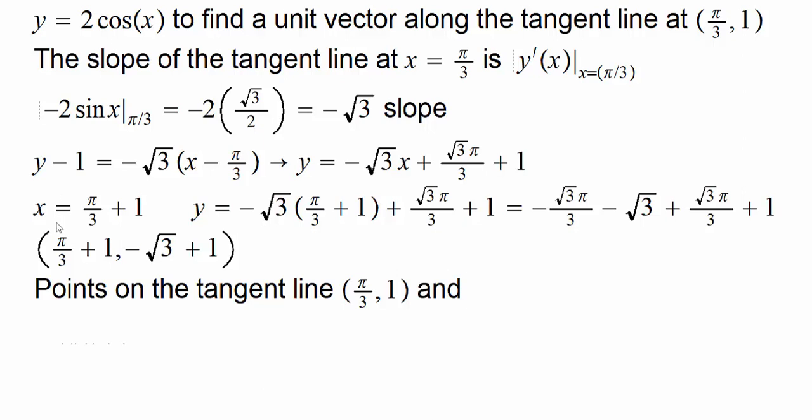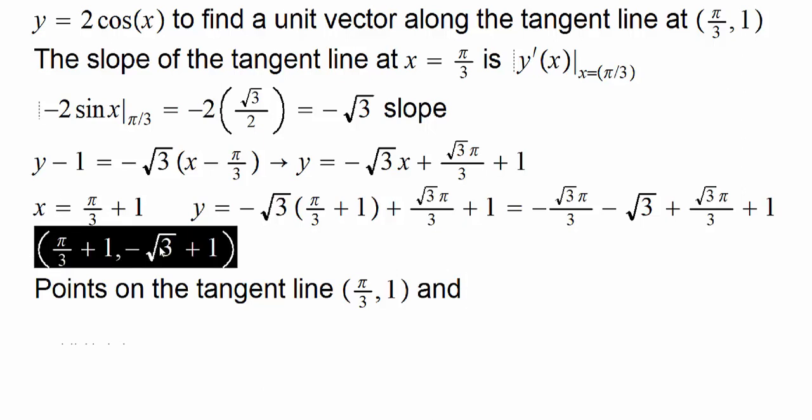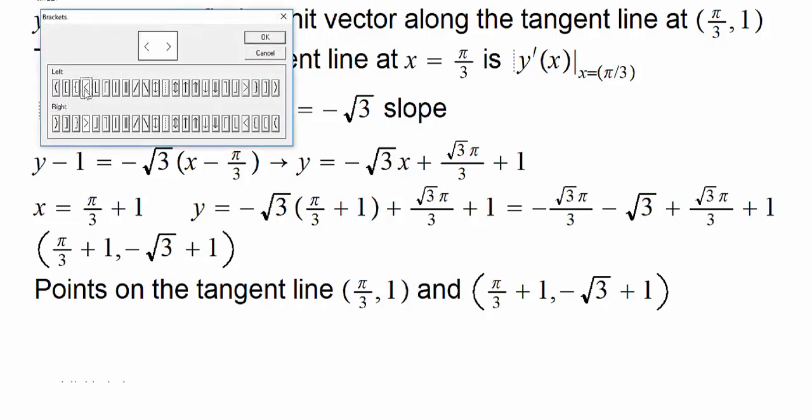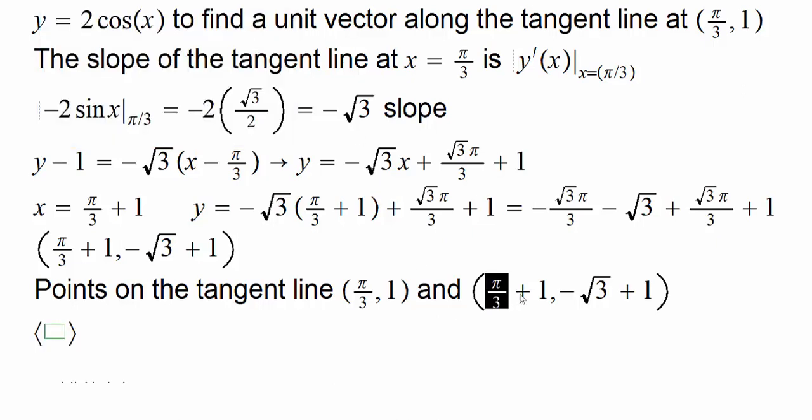And if we construct a vector, how can we do that? We simply will take the first coordinate here minus the first coordinate here. And then the y coordinate here, and then we can subtract the y coordinate of the initial point.